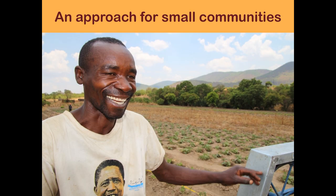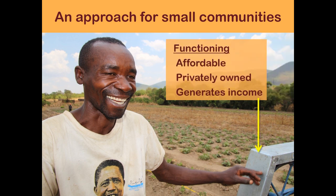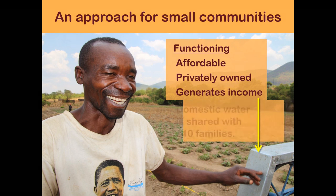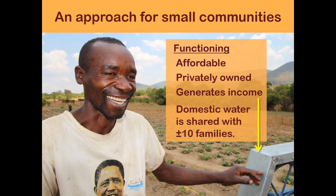Now let's come back to the picture — what we learned about functionality. Just like the ox cart, we provide a pump to a family. We make sure it's affordable, it's privately owned, and it generates income. If a pump is affordable, it can be repaired. If it's privately owned, there's no discussion about who should repair it. If it generates income, we're sure it's going to be repaired. We've implemented 50 of them in one year, and we've learned that the water from these pumps — although they are privately owned — is still shared for domestic use with about 10 neighbors, and they don't even charge anything.